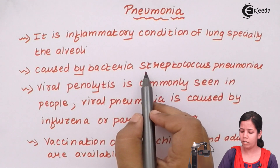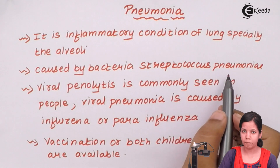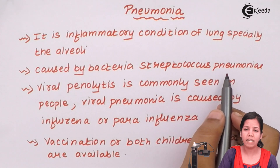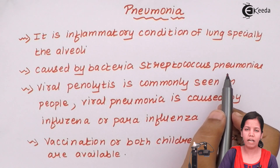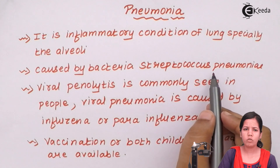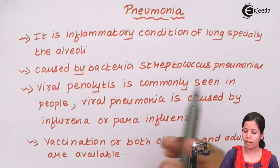Pneumonia is caused by the bacteria Streptococcus pneumoniae, which can be present in the atmosphere, in soil, and in different places. Since the immune system of a child is slowly and steadily developing after birth, the child can become prone to Streptococcus pneumoniae, which could be normal flora in certain households or places.